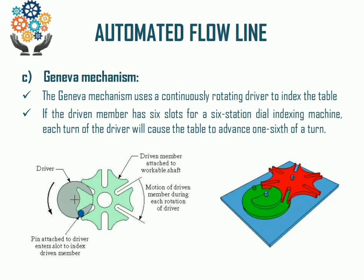The next important mechanism is the Geneva mechanism. The Geneva mechanism uses a continuous rotary mechanism in which the Geneva wheel fits with the driver member. As you can see in the diagram, the Geneva wheel has six slots for a six-station dial indexing machine, and each turn of the driver wheel causes the table to advance one-sixth of a turn. The Geneva mechanism is one of the effective rotary mechanisms used for synchronous type transfer.